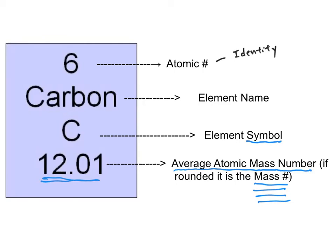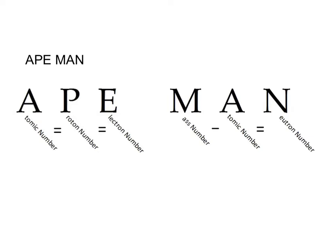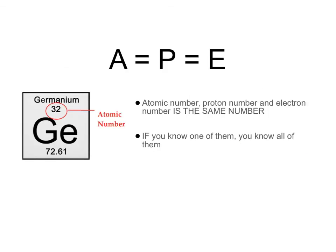The average atomic mass is like the average of all the masses of that element. We'll learn more about isotopes and why it's an average next week, but for now we'll also call this the mass number. For carbon, 12.01 is the average atomic mass. Now, what we're going to figure out is how many protons, neutrons, and electrons are in a certain atom. I'm going to teach you a process called APE MAN, which will help you on the homework and quiz.